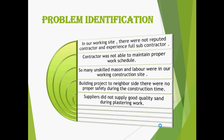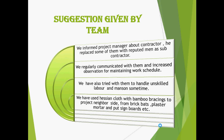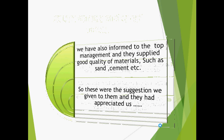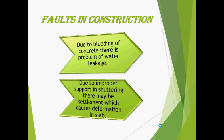In our project there were some problems identified along with suggestions, which were accepted by the higher authority. No construction is perfect — some faults may occur. The two major problems faced were due to bleeding and due to improper support in shuttering. You can see how bleeding occurs and what the effects of improper shuttering support are on the slab.